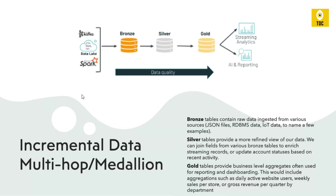As you can see, this is what we call the multi-hop or medallion architecture. On the left-hand side there are different sources from which we ingest data — flat files, Spark Streaming, data coming from Kafka, any database, or any kind of source. The intention is to feed the data to reporting or stream analytics, for any kind of analysis or analytics on top of that data.